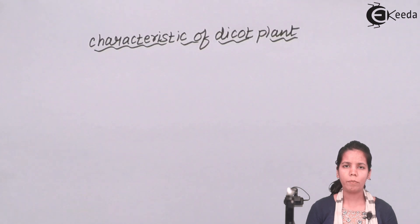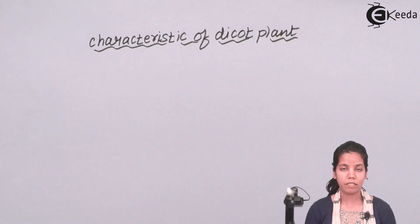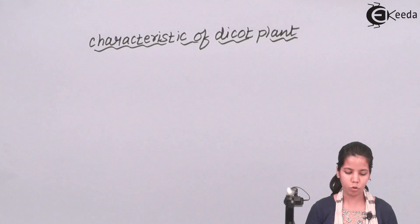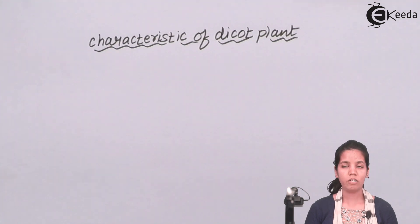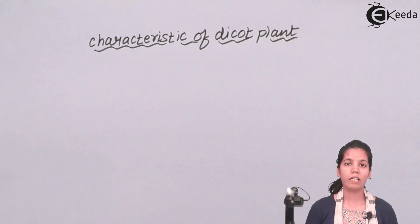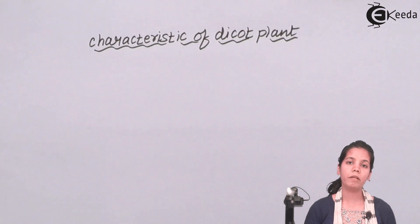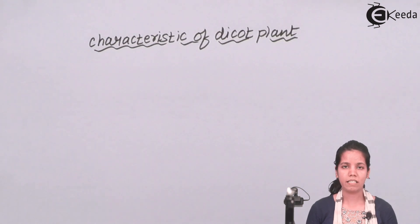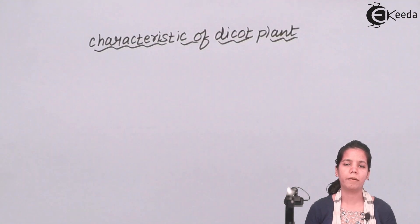Dicot plants basically have tap root systems. They could be perennial in nature. There are certain dicot plants that are advantageous in nature. Secondary growth in them occurs due to the cambium region, or you can say the secondary tissues that originate from the meristematic tissue. These plants grow in very less amount of water and they require a lot of nitrogen fixation.